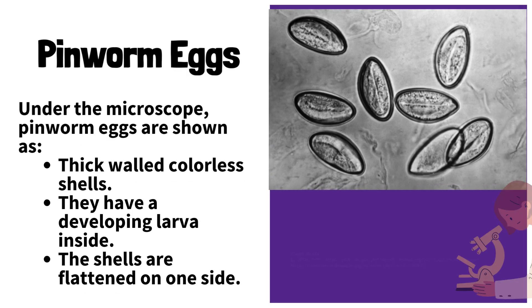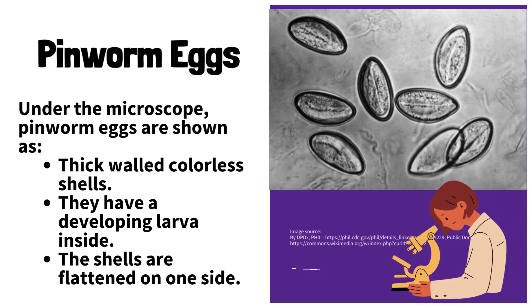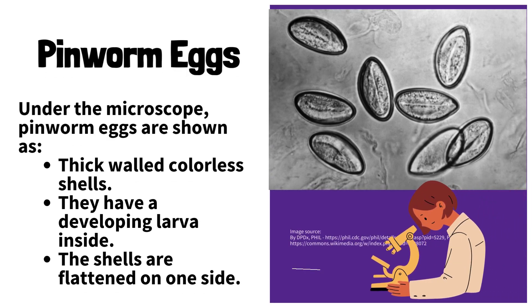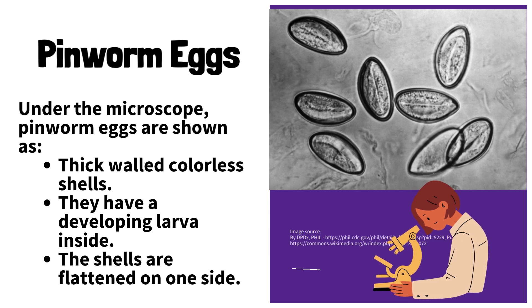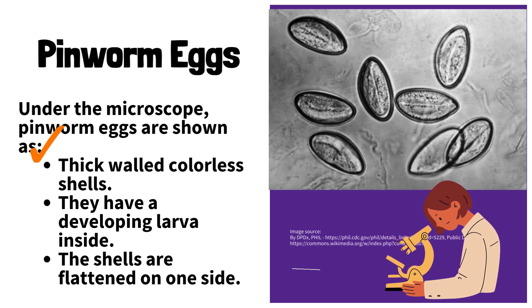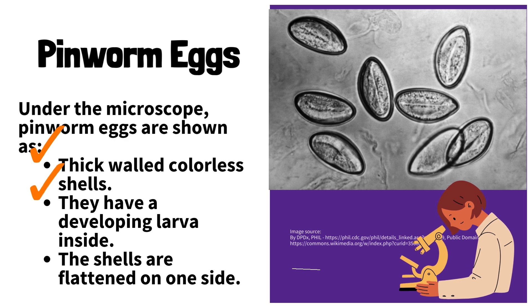Characteristics of pinworm eggs under the microscope: pinworm eggs appear as thick-walled, colorless shells with a developing larva inside. The shells are flattened on one side.